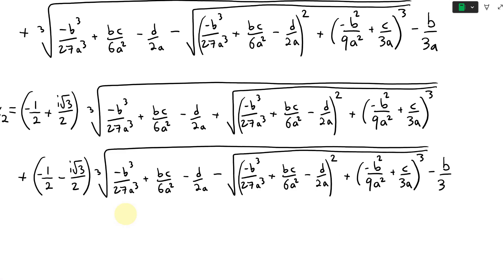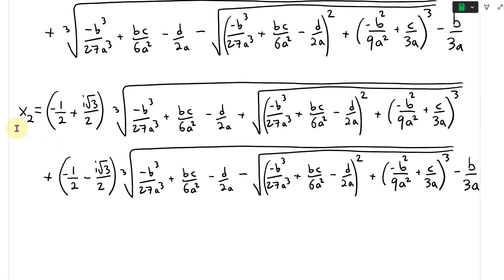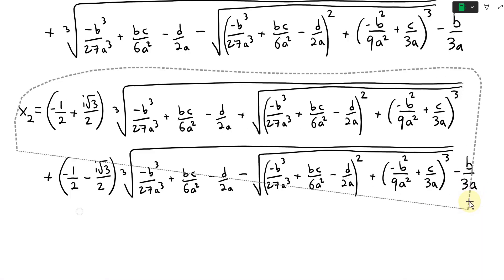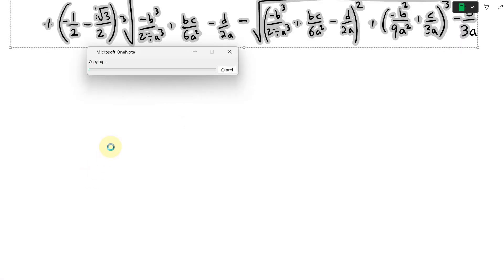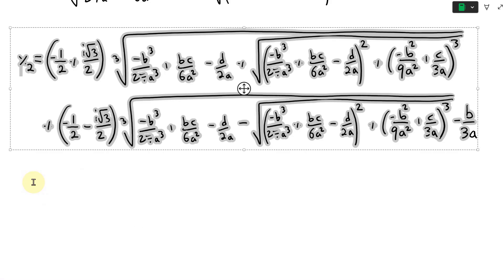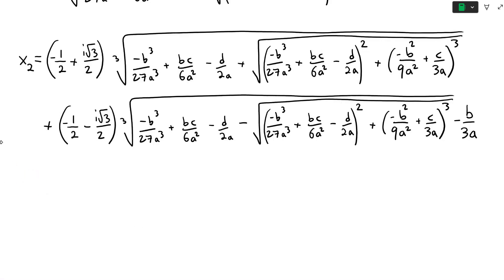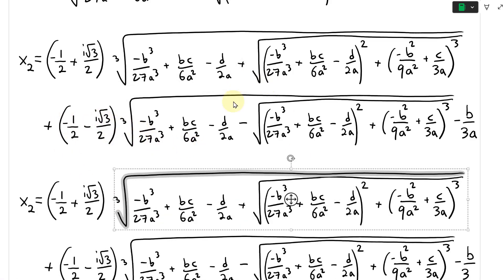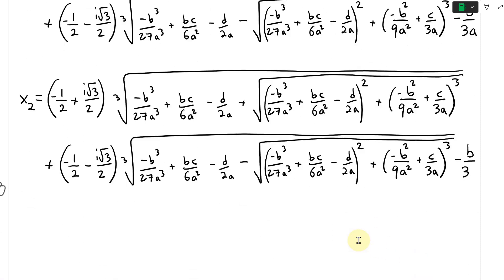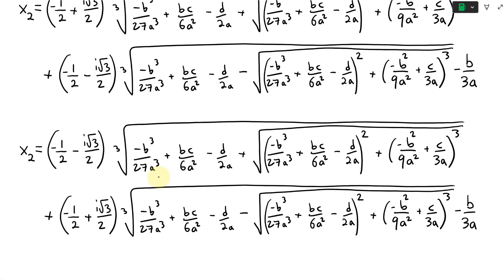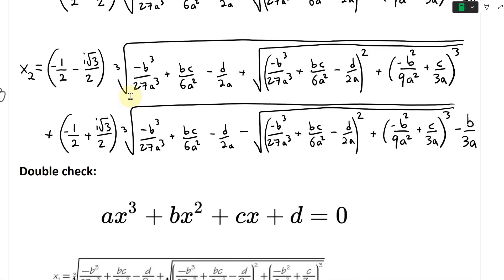There's the plus, minus, plus, minus pattern and the negative b over 3a term. The last one is x3 - copy and paste the whole expression, then add the last term. For x3, the w2 and w1 factors swap compared to x2: the minus becomes plus and the plus becomes minus. And that is it - so there's x3. Now I'll do a quick double check from a reference.